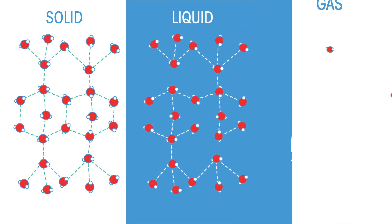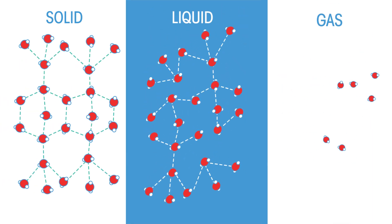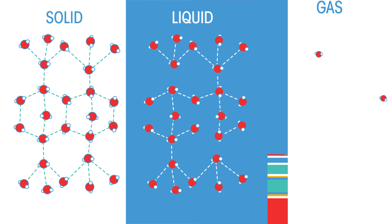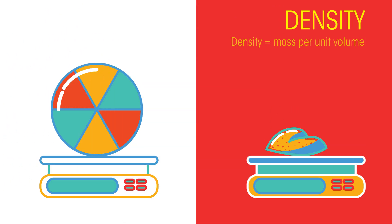Informally, density is a measure of how packed a material is with mass. Density is defined as the mass of an object per its unit volume.